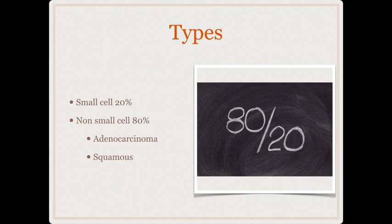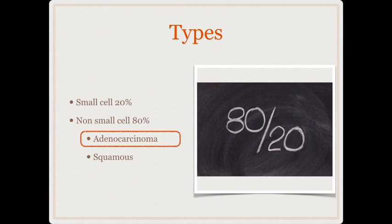Coming to the pathological types of lung cancer, they are mainly of two types. Small cell cancer constitutes about 20% of all lung cancers, and non-small cell cancer constitutes about 80%. Among non-small cell cancers, adenocarcinoma is the most common lung cancer — this is a very common MCQ. The most common histological type of lung cancer is adenocarcinoma.